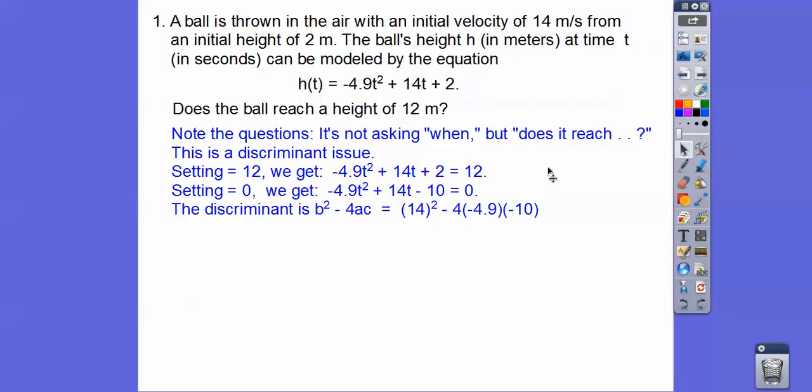So we just want to go ahead and multiply. 14 times 14 is 196. And then 4 times 4.9. Here we have a negative times a negative is a positive times another negative is going to be a negative. This is 19.6. 19.6 times 10 is 196. So we have 196 minus 196, which equals 0.